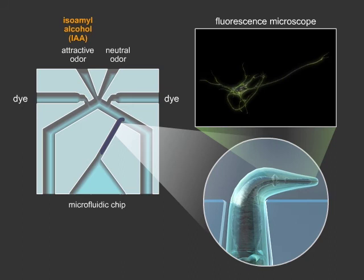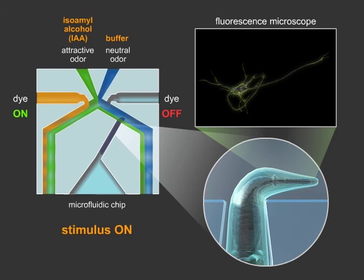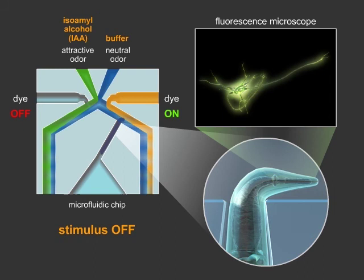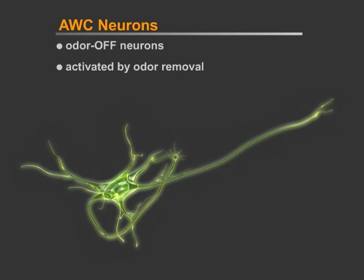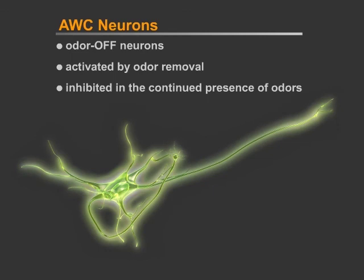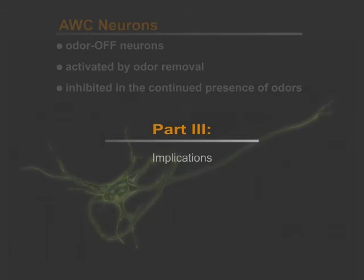We flow in two stimuli: isoamyl alcohol, which is an attractive odor, and a neutral odor. Surprisingly, we see a decrease in intracellular activity when we flow in the attractive stimulus, and an increase in activity when we remove the odor. As it turns out, the active AWC neuron is an odor-off neuron that is activated by odor removal and inhibited by the continued presence of odors. This data, along with previous behavioral experiments, has allowed us to determine that AWC responds specifically to attractive stimuli.